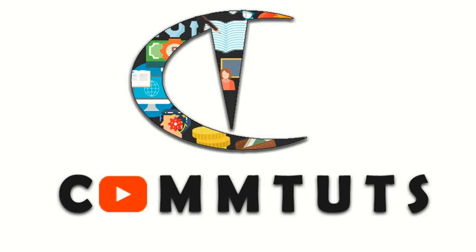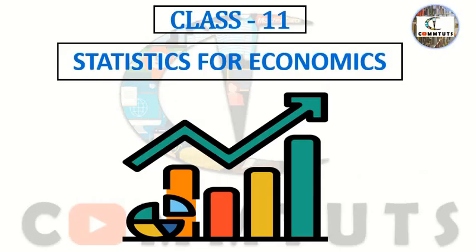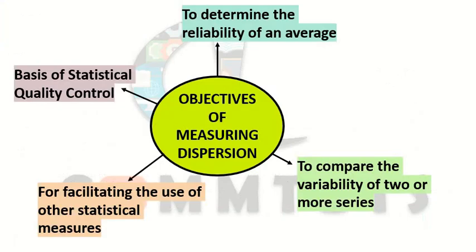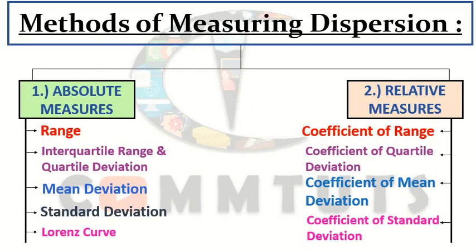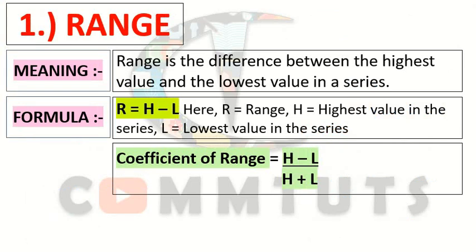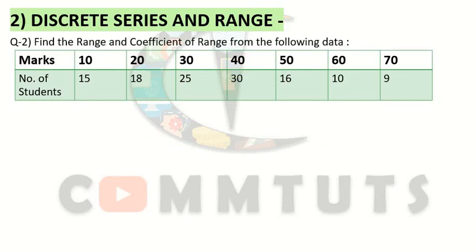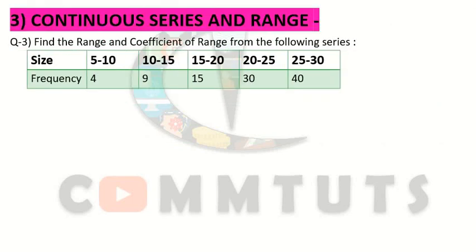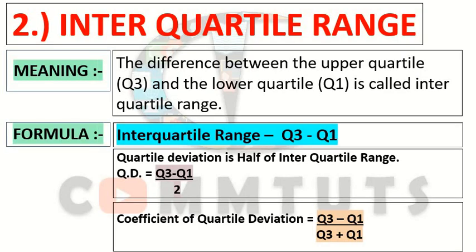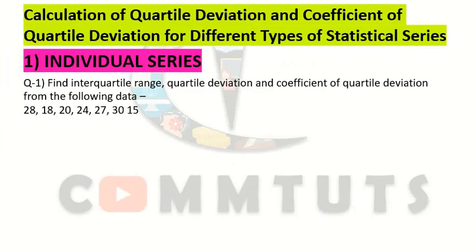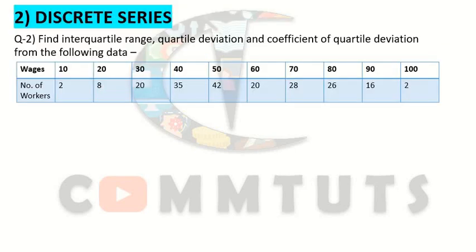Hi everyone, welcome to my channel Computes. This is tutorial number 59 of Statistics for Economics for Class 11. Today we will continue the measure of dispersion methods. In tutorials 57 and 58, we discussed the meaning of dispersion, the objectives of dispersion, and the methods of dispersion. We discussed the first method — range — calculated in individual, discrete, and continuous series. After that, we started interquartile range in individual and discrete series.